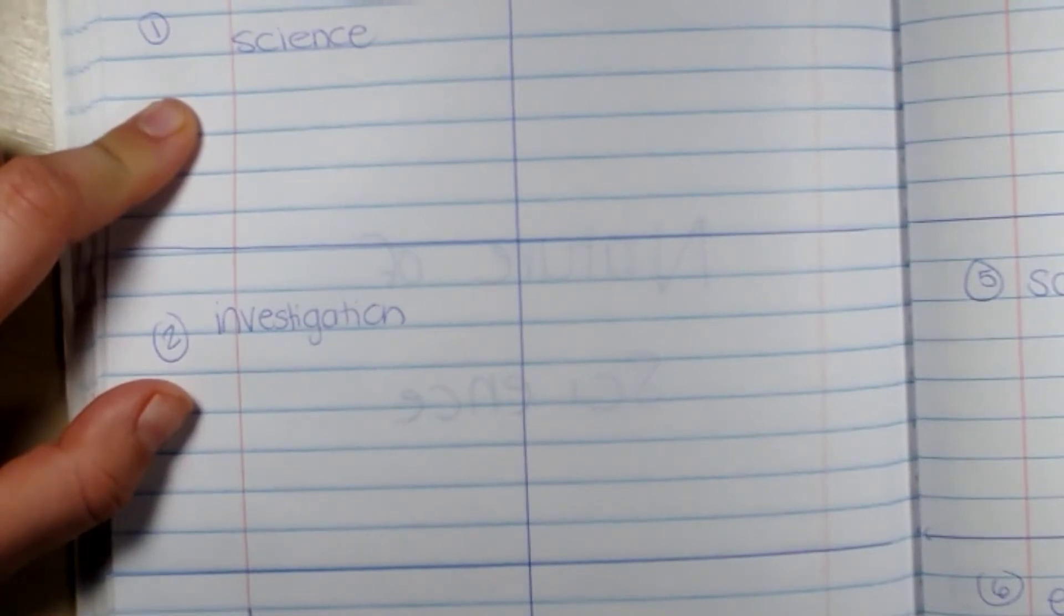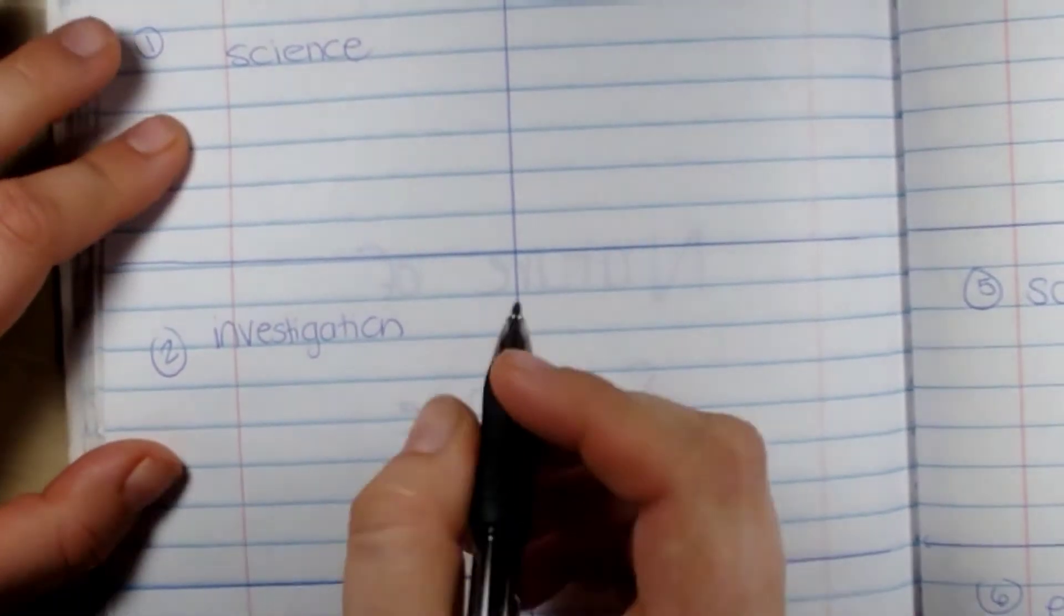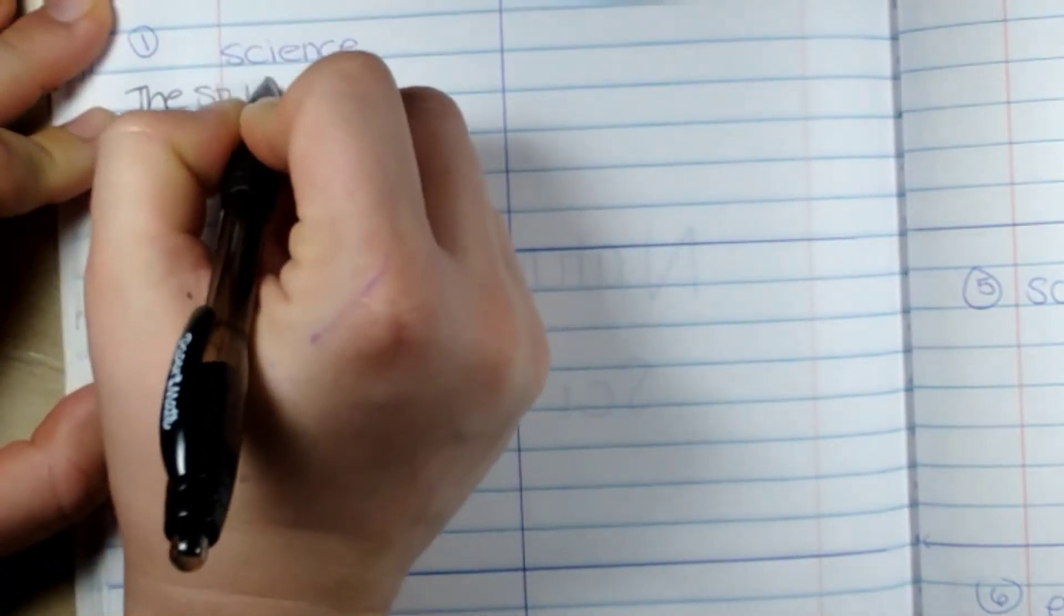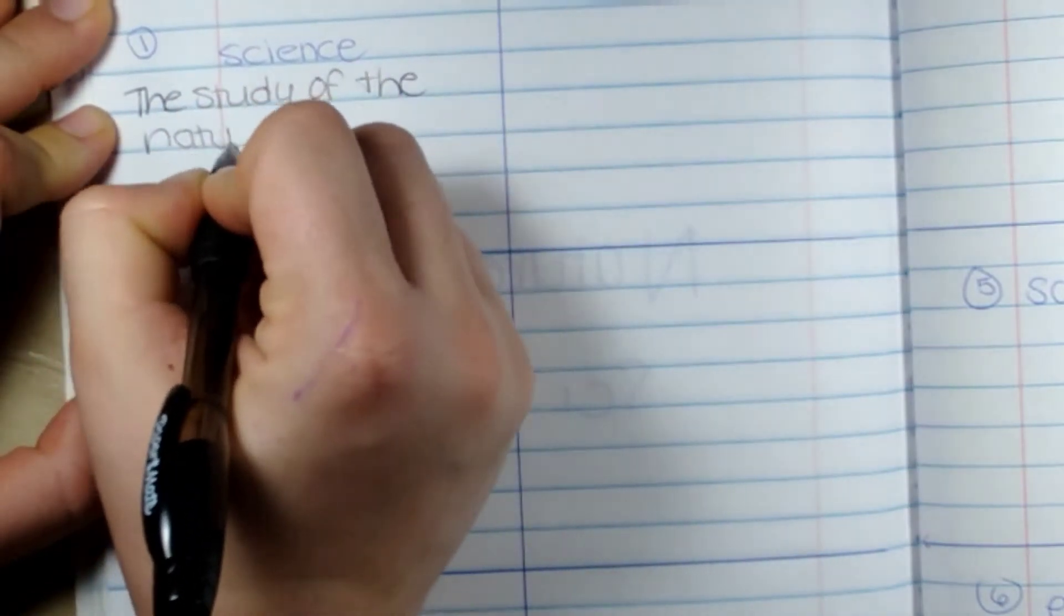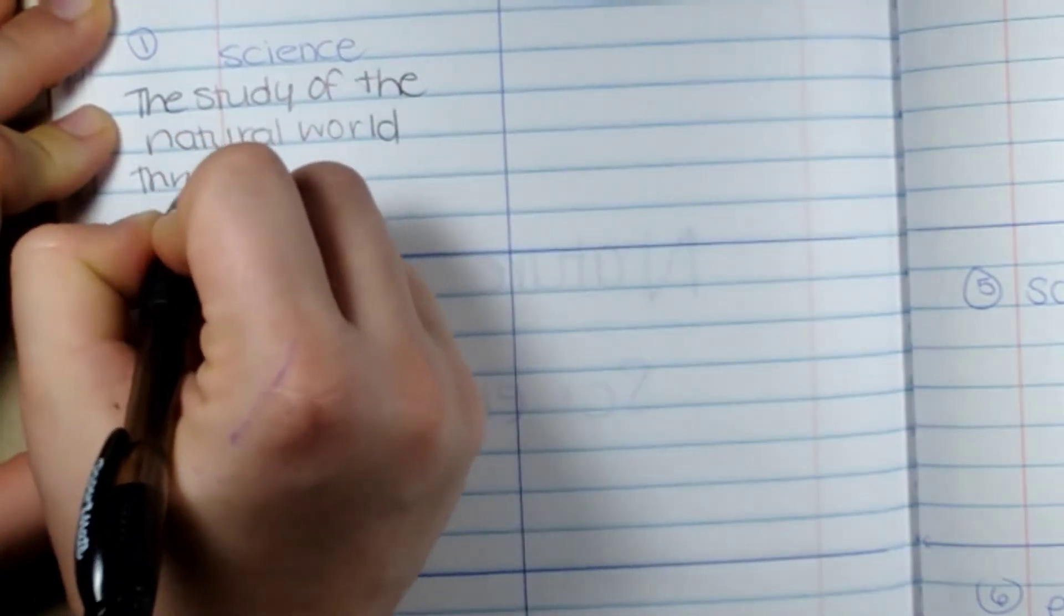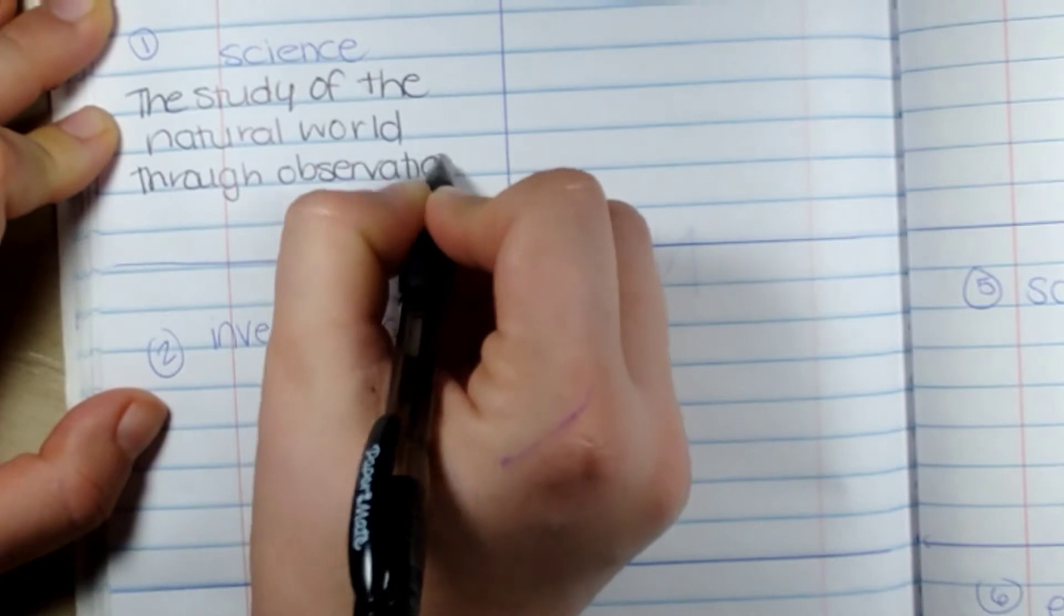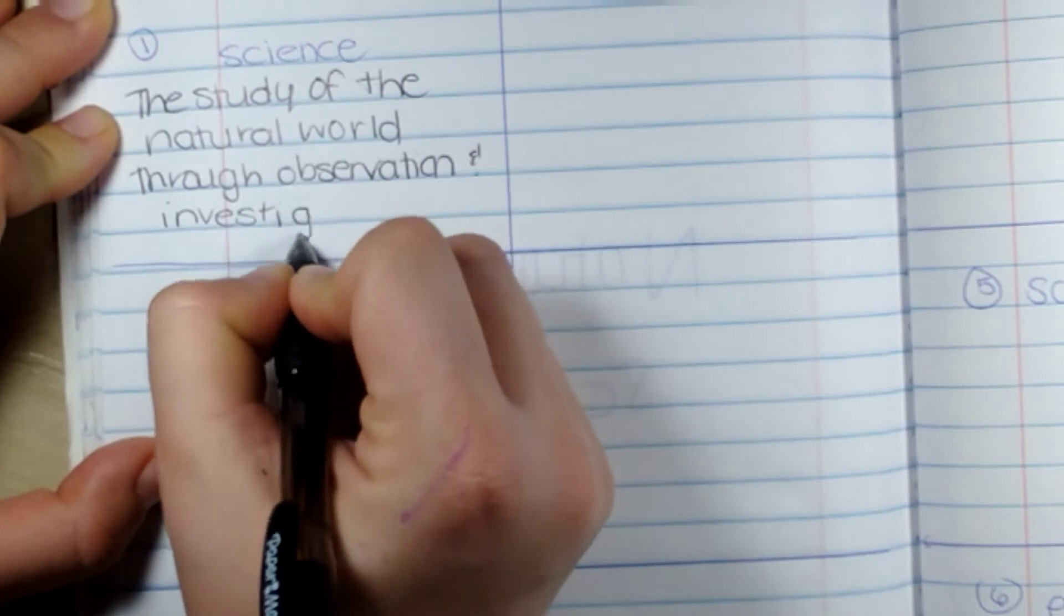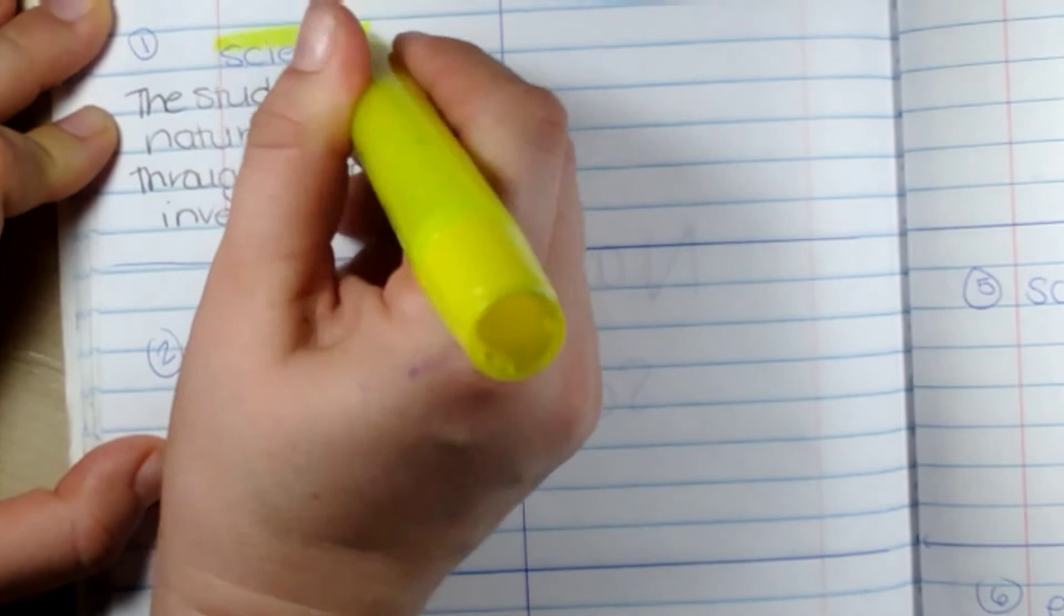So the first one is science. Science is the study of the natural world through observation and investigation. The study of the natural world through observation and investigation. Now if you need more time, please pause it and finish writing before you move on to the next question.